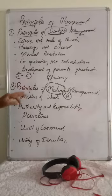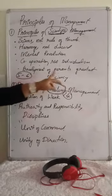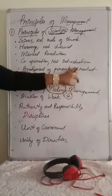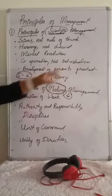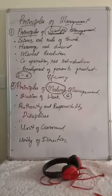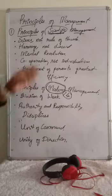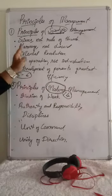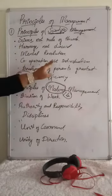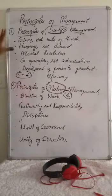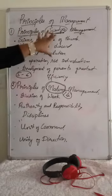The fifth and last scientific principle is development of persons to the greatest efficiency. To develop persons, proper training must be provided to the employees, and they must be considered essential in an organization. These are all five principles of scientific management.